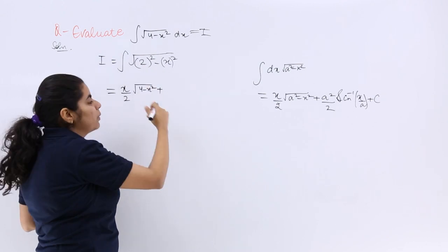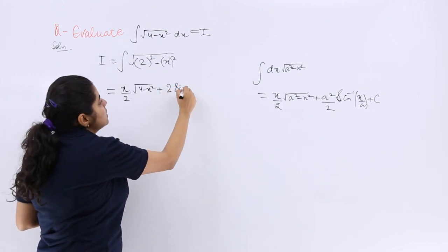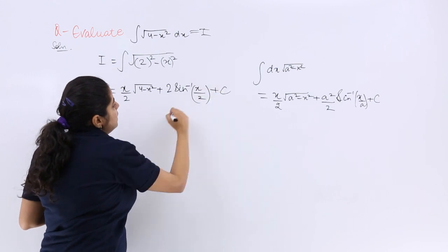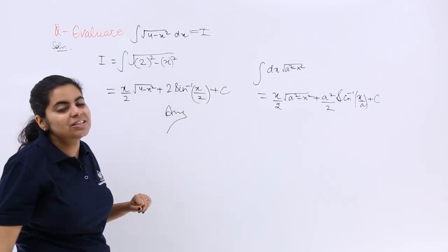2 square is 4, 4 upon 2 is again 2 sine inverse x by a plus c, and that should be your answer to this question.